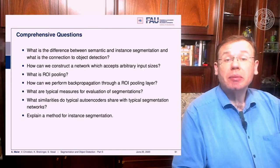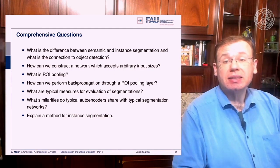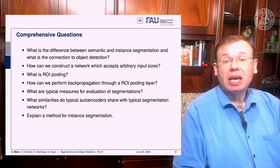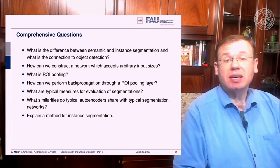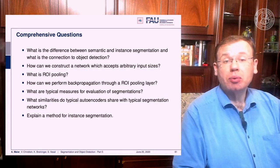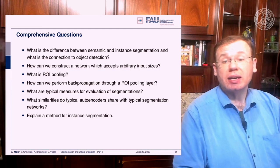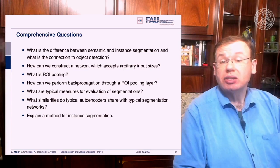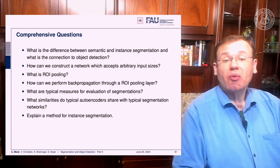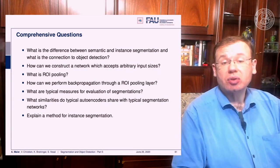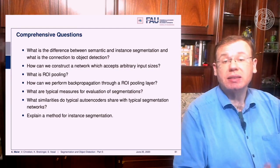Here are some comprehensive questions for you: What is the difference between semantic and instance segmentation? What is the connection to object detection? How can we construct a network which accepts arbitrary input sizes? What is ROI pooling, and how can we perform backpropagation through an ROI pooling layer? What are typical measures for the evaluation of segmentations? Or, for example, explain a method for instance segmentation.